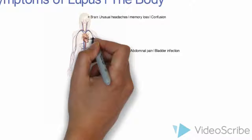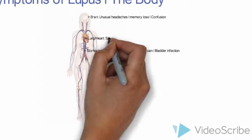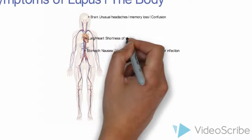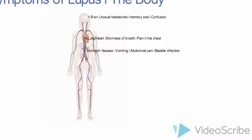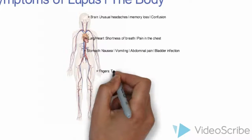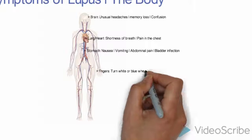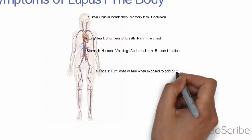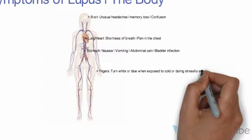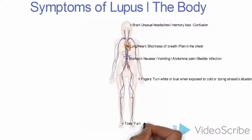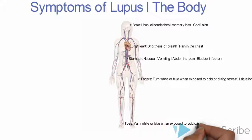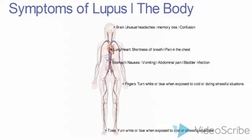With the fingers and the toes, they usually turn white or blue when exposed to cold or during stressful situations. Along with this, most people with lupus will also have some form of arthritis, which makes it very painful for them to move around.